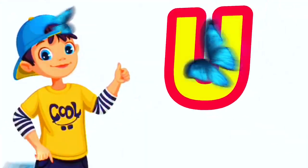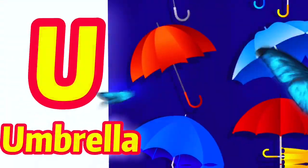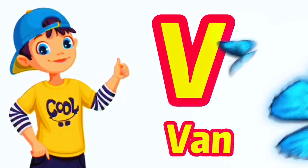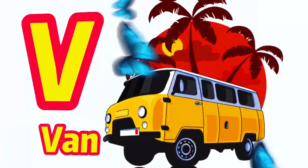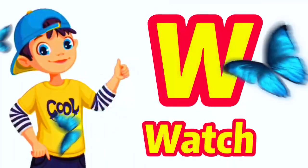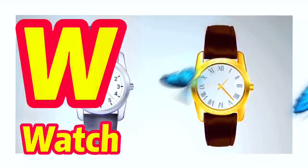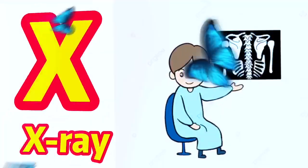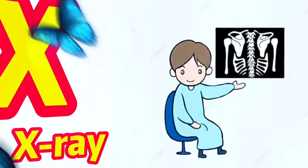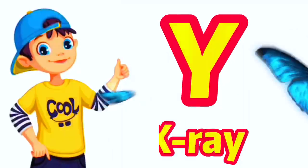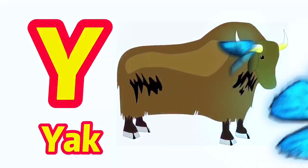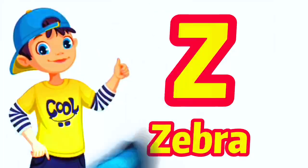U for umbrella, V for well, W for vhach, X for x-ray, Y for yak, Z for zebra.